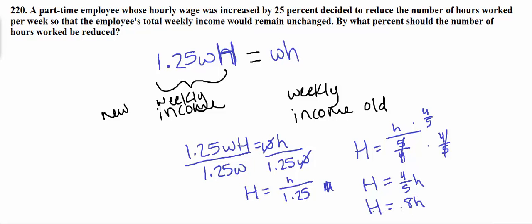So that means that the new hours are equal to 80% of the old hours. So what that means is that the number of hours worked needs to be reduced by 1 minus 0.8, or 0.2, meaning 20%. There we go.